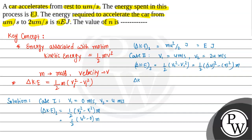So delta KE for the second case will be equal to half of m times (2u whole squared minus u whole squared), which gives 4u squared minus u squared, equal to 3u squared. So this becomes 3 divided by 2 times m times u squared, which is 3 times (½mu squared). Comparing with equation 1, which is E joule, this gives us 3 times E joule for the second case.